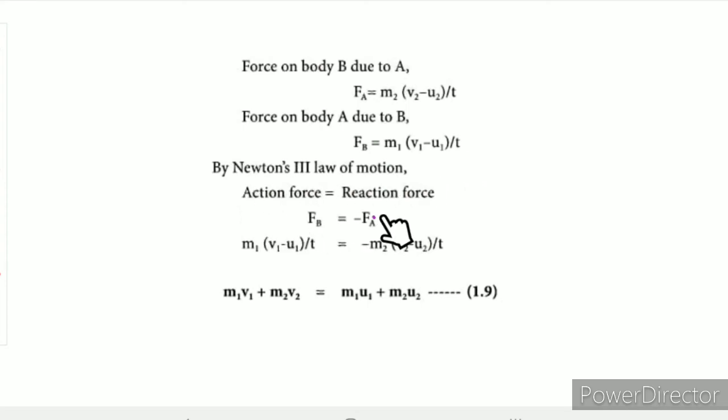So FB is equal to minus FA. Substituting the equations, M1 into (V1 minus U1) divided by T equals minus M2 into (V2 minus U2) divided by T.